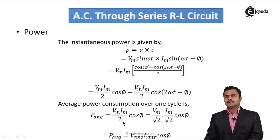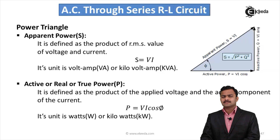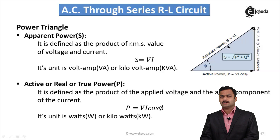Average power for an inductive circuit is Pavg = (Vm·Im/2)cosφ. Dividing by √2·√2 gives Pavg = VRMS × IRMS × cosφ. From this, we derive the power triangle: along the x-axis is active (real/true) power P, along the y-axis is reactive power Q, and the diagonal is apparent power S, with φ the angle between S and P.